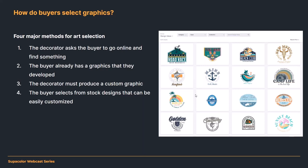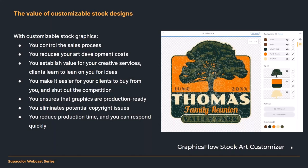Custom graphics need to be reserved for when it's appropriate — when you have a big enough order to cover production costs, or when there's reorder potential. Also, buyers can select stock designs that can be easily customized. We know a lot about this — the successor company to GraphicsFlow was Digital Art Solutions, which I co-founded with my sister. We were the first company to produce stock art content for the apparel decoration industry starting in 1992, making it a standard way of doing business.